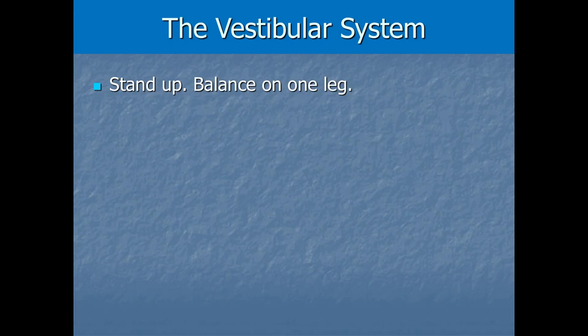We can experience this directly through a simple version of Romberg's test, used by neurologists to diagnose issues in these systems. Be careful — anything involving balance carries some fall risk, so find a spotter or stand near a chair. For the easy version, just stand up and balance on one leg with your eyes open. Most people can do this for a while, and at that point you have all three systems — visual, proprioceptive, and vestibular — helping you balance.